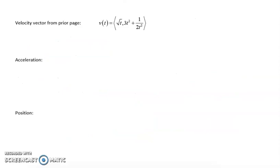Next problem, we brought forward the velocity vector from the prior page, just so it's easy to see. The acceleration at time equals 4. Well, the first thing we have to do is get the acceleration vector, and we do that by differentiating each component of the velocity vector.